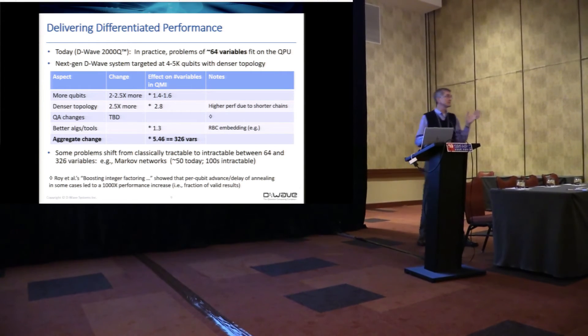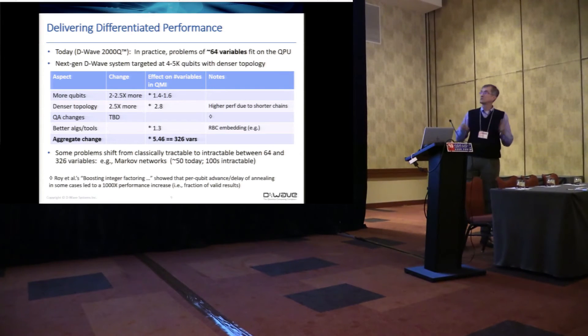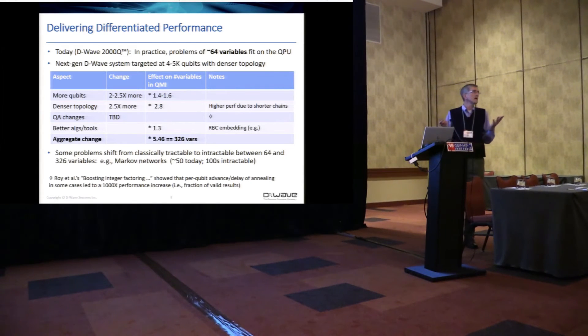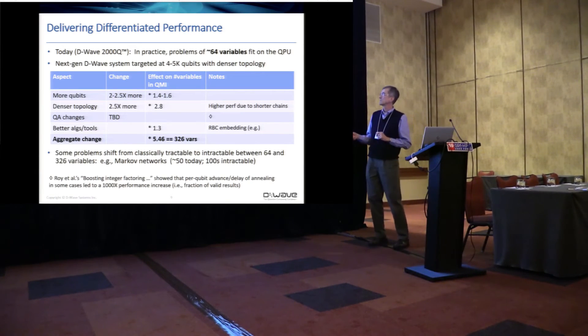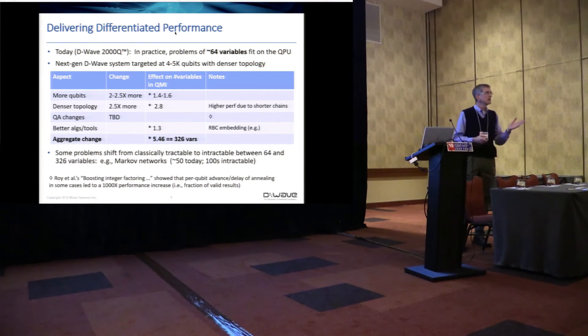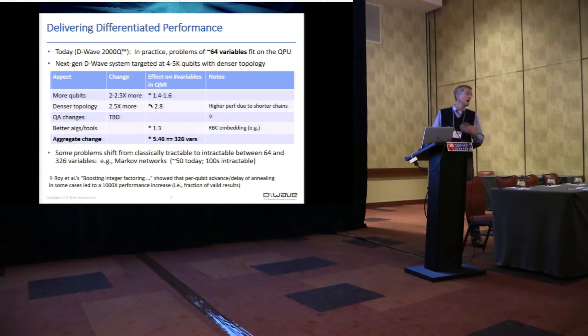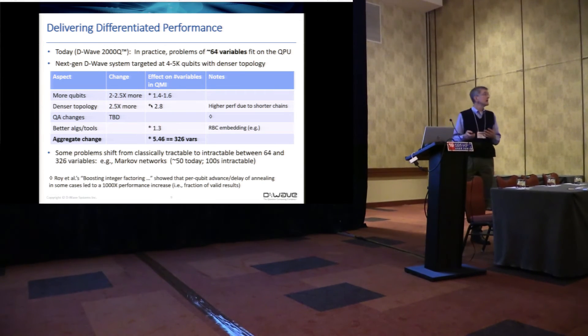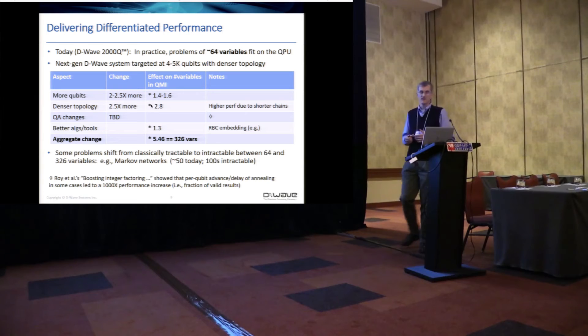Well, who does this matter for? Well, actually there were a couple of comments earlier about two to the 300th being the size of the universe and all that. And of course, none of our quantum processors scale with that idealistic view. But we do want to talk about where are there problems that are classically tractable at their current size that will be classically intractable at 326 variables. And an example of those working with one collaborator is Markov networks, where the problems they're able to solve today are about 50 variables and the numbers in the hundreds are intractable. So 326 sounds like a major win for them.